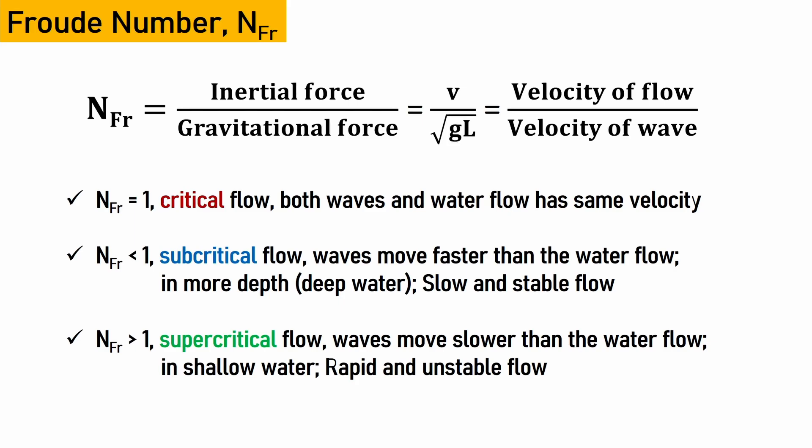The Froude number can also be understood as the ratio of the velocity of the flow to the velocity of a wave. Take the ocean as an example: on the surface we have waves that arise because of gravitational force, while below the waves the rest of the ocean flows as a channel due to tectonic plate movements, aquatic life, climatic conditions, and seawater level changes. So the Froude number is the ratio of the flow velocity, driven by inertial forces, to the wave velocity, driven by gravitational force.